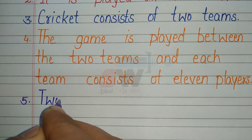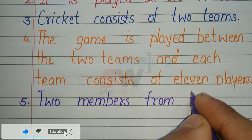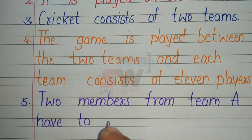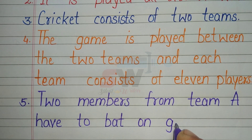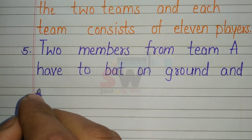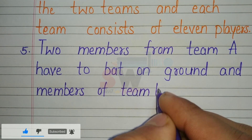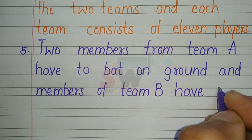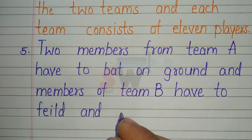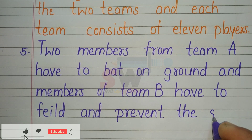Fifth: Two members from team A have to bat on the ground, and members of team B have to field and prevent the score.